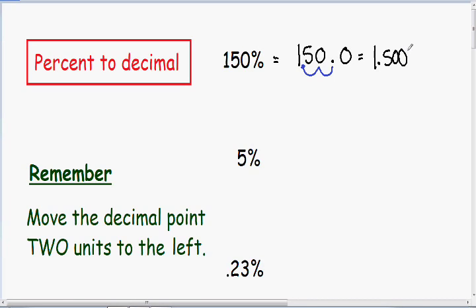Your final answer should never have any trailing zeros. 1.500 is exactly the same as 1.5. So if we change 150 percent into a decimal, we get a final answer of 1.5. I always like to double check my answer — your decimal should always be smaller than your percentage. Notice our decimal of 1.5 is certainly smaller than our percentage of 150. That's one way to double check, to make sure you moved the decimal point in the right direction.